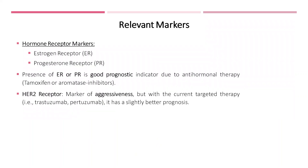To properly understand anti-hormonal treatments, we must first introduce key markers. First, we have hormonal receptor markers, which include estrogen receptor and progesterone receptor. Estrogen receptor is an important diagnostic determinant since approximately 70% to 75% of invasive breast carcinomas are characterized by significant enhancement of estrogen receptor expression. The presence of estrogen receptor and progesterone receptor is a good prognostic indicator because of the possibility of anti-hormonal treatment, which includes tamoxifen or aromatase inhibitors. Another important marker is HER2, which is a marker of aggressiveness, but with current targeted therapies such as trastuzumab, it has a slightly better prognosis.